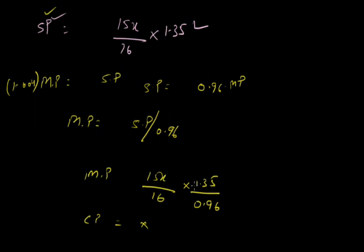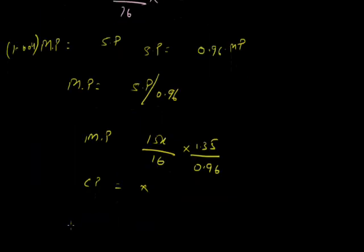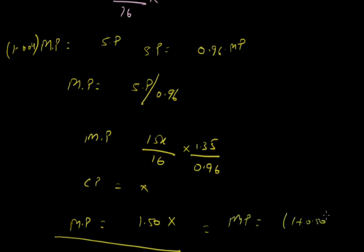On calculating 15/16 × 1.35/0.96, this comes out to 1.50 of X. Therefore market price = 1.50X = (1 + 0.50) × CP. This means market price is 50% above the cost price.